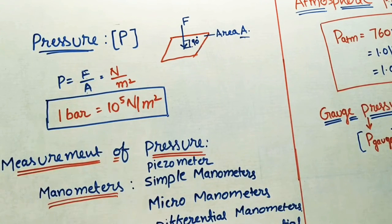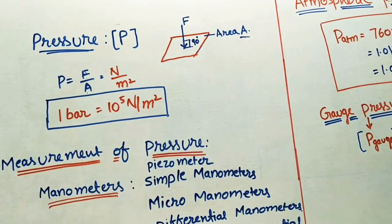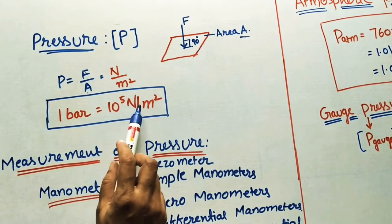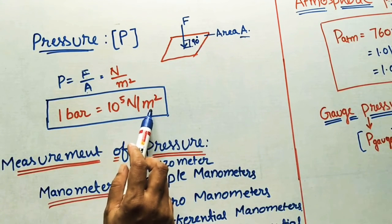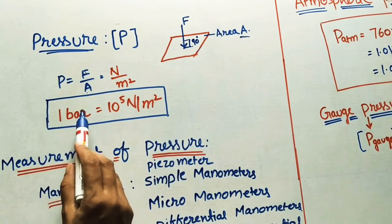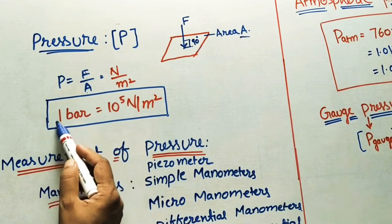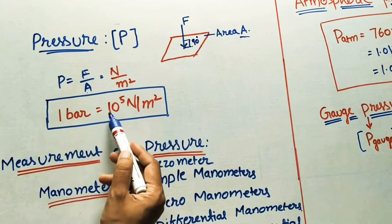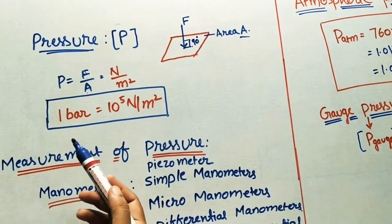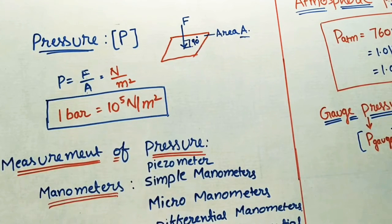The units for force are Newtons and for area we take meter squared. Sometimes in problems the pressure value is given in terms of bar. One bar is equal to 10 to the power 5 Newton per meter squared — just remember this relation. So two bars means 2 × 10⁵ Newton per meter squared.